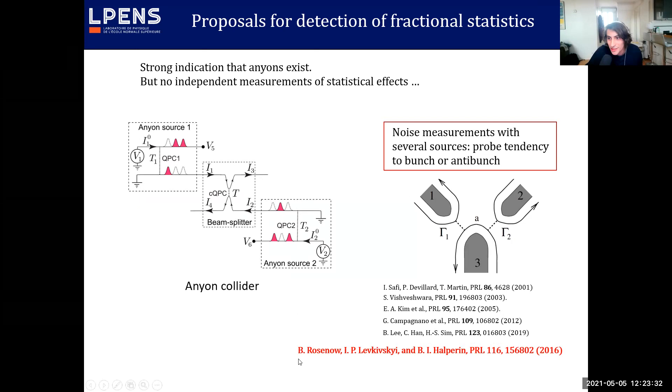Rosenow has already presented you the working principle, but we will do it again. We can use two input quantum point contacts as anyon sources so we can tune them in the weak backscattering regime to induce some quasi-particle tunneling to the input arms of the central beam splitter and the same thing can occur at the central beam splitter where collisions can happen and then we can probe the cross-correlation at outputs three and four.